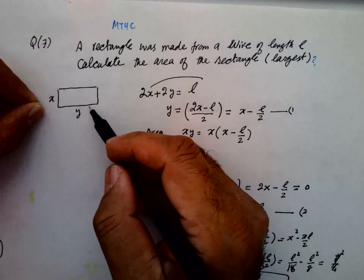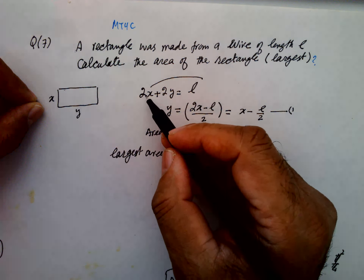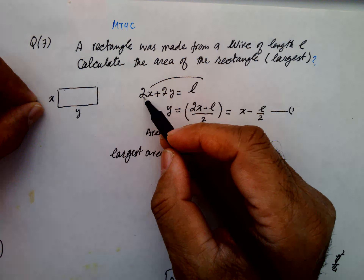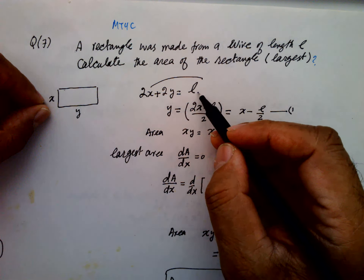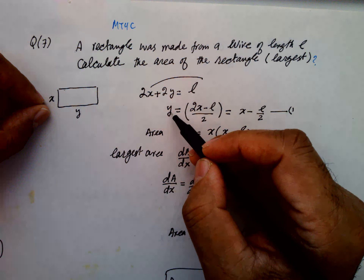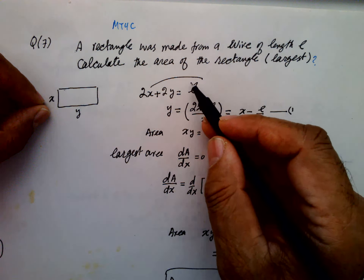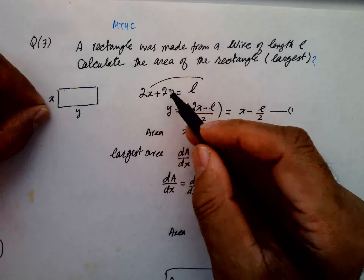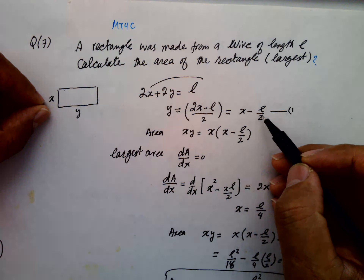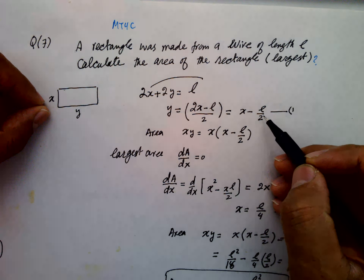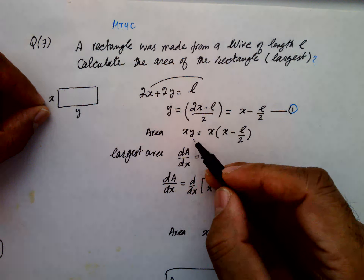So this is X and this is Y, the sides of the rectangle. The perimeter of this rectangle is 2X plus 2Y equals L. So Y can be expressed in terms of X: Y equals X minus L over 2. This is equation number 1, and the area is X times Y.